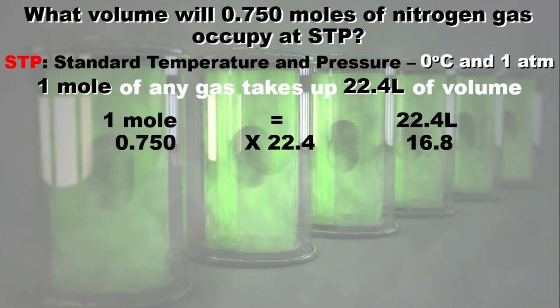This will give us 16.8. If you look at it, it makes sense. So 1 mole will take 22.4 liters. 0.75, which is smaller than 1, will take up 16.8 liters, which is smaller than 22.4 liters.